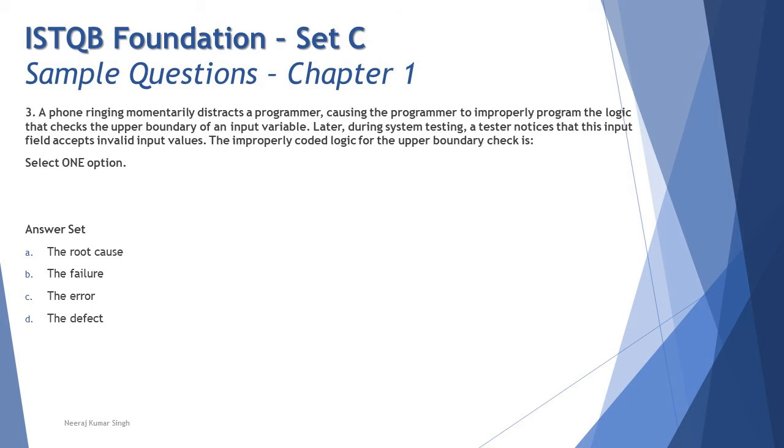Moving into the next question which is question number three: A phone ringing momentarily distracts a programmer, causing the programmer to improperly program the logic that checks the upper boundary of an input variable. Later during system testing, a tester notices that this input field accepts invalid input values. The improperly coded logic for the upper boundary check is... Now here is a very typical twisted question which you should be taking into account in terms of understanding that how exactly a scenario can be created. Of course you do understand that there was a distraction somehow for the programmer and the programmer did something wrong.